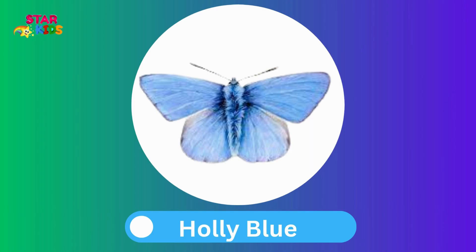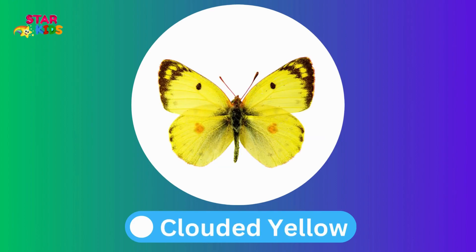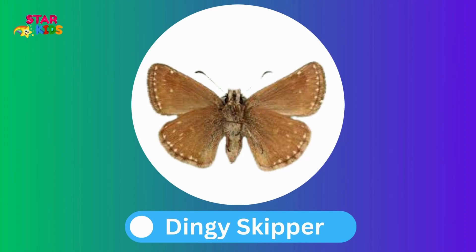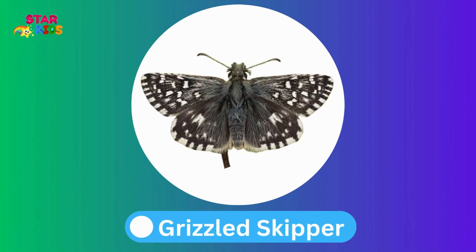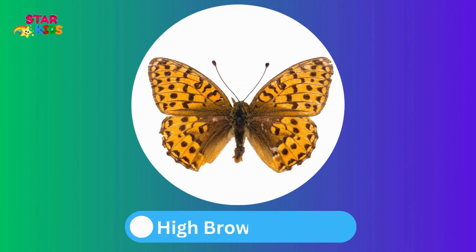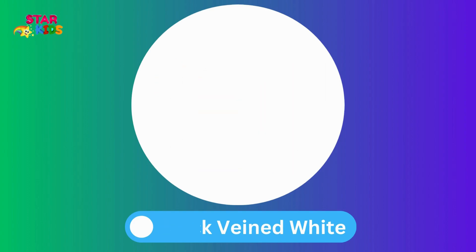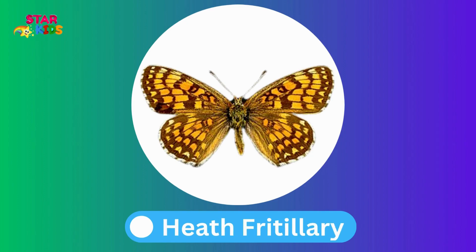Holly blue. Grayling. Clouded yellow. Dingy skipper. Cryptic wood white. Grizzled skipper. High brown fritillary. Black veined white. Green hair streak. Heat fritillary.